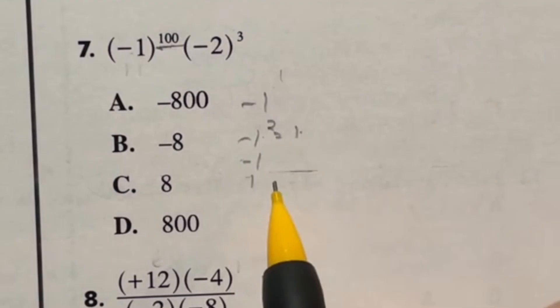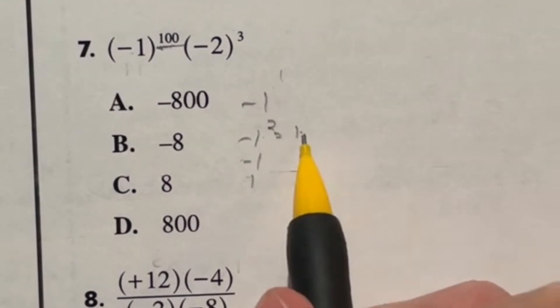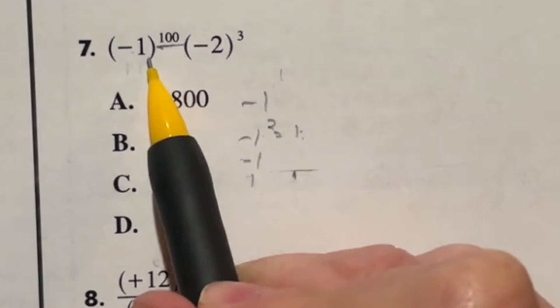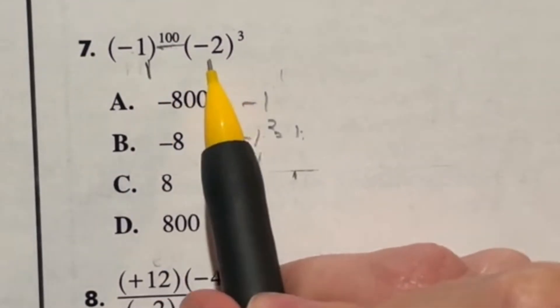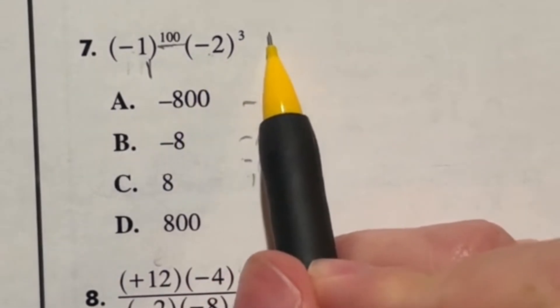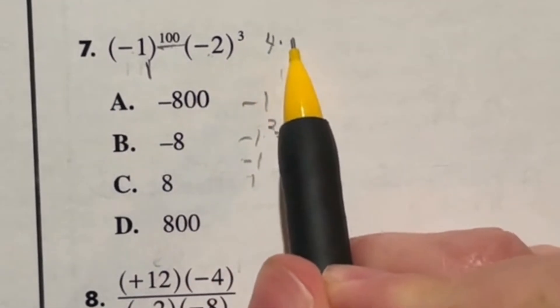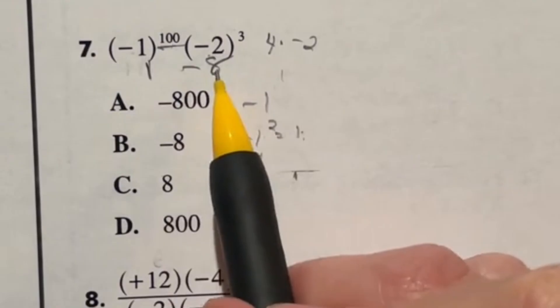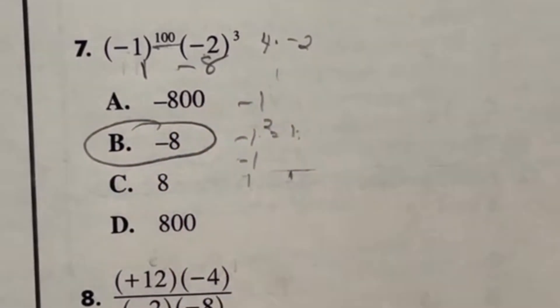So it just bounces back and forth between positive and negative. Notice that the two and the four mark is when you get these positive ones, meaning that all even numbers are the ones that end up being positive. So this will end up being a positive one. We got negative two to the third power. Negative two times negative two gives us a positive four times another negative two is going to make it negative eight. So I got one times negative eight gives me negative eight for a final answer of B.